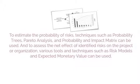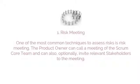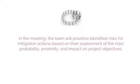To estimate the probability of risks, techniques such as probability trees, Pareto analysis, and probability and impact matrix can be used. To assess the net effect of identified risks, tools such as risk models and expected monetary value can be used. The first risk assessment technique is the risk meeting. The product owner can call a meeting of the Scrum Core team and optionally invite relevant stakeholders. In the meeting, the team will prioritize identified risks for mitigation action based on their assessment of the risk's probability, proximity, and impact on project objectives.